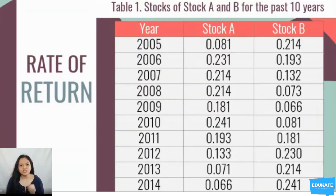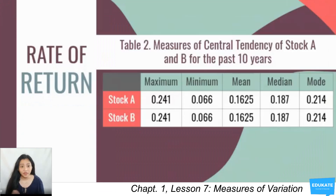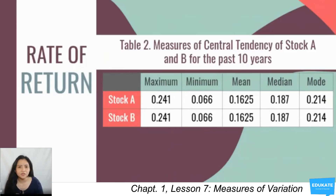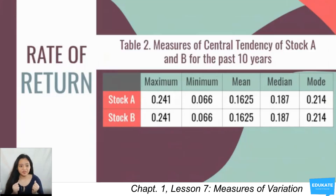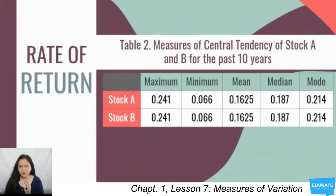To determine which stock is best to invest in, let us compute some measures of location and measures of central tendency. You can see the maximum and minimum rate of return for Stock A and Stock B, along with their corresponding mean, median, and mode. Looking at this, all have the same values — so how do we determine which is better to invest in? Why don't we try graphing it?